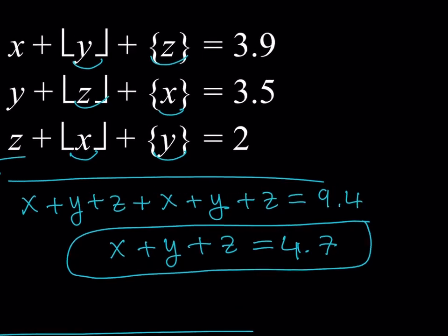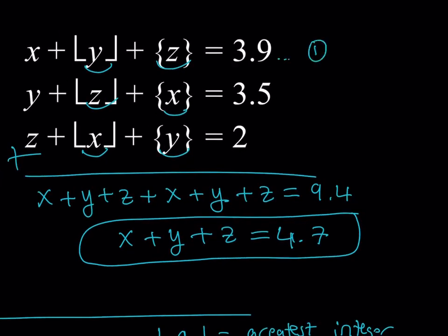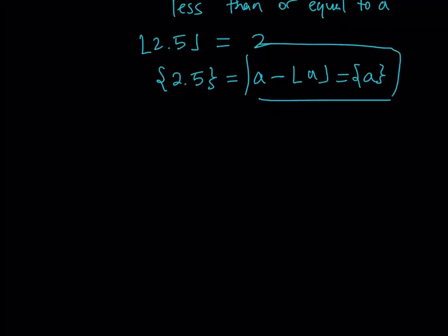I'm going to number these equations now: this is number one, this is number two, and this is number three. Now I'd like to manipulate these equations further, because we know the sum of x, y, z is 4.7, and we're looking for real solutions — x, y, z don't have to be integers. The next step involves using two equations at a time. I'm going to use number one and number two together.